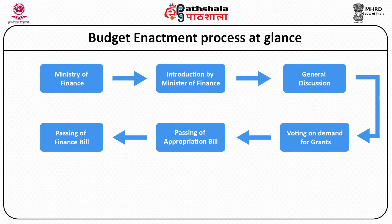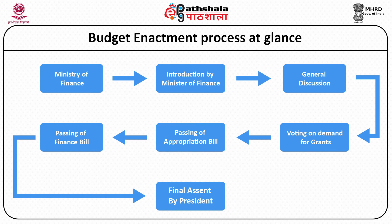The next stage in the budget enactment process is the Budget in Rajya Sabha. After all the discussion is complete and the budget is voted by the Lok Sabha, it goes to the Rajya Sabha. However, the Rajya Sabha has only limited functions to perform because it has no power either to introduce amendment or rejection. It can only discuss it and return it back to the Lok Sabha within a period of 14 days from the receipt of the bill. If it does not do so, it is assumed that it has been passed by it. The last step in the budget enactment process is the Presidential Assent. After the budget is passed by the Rajya Sabha, it goes to the President, after whose assent it is ready for execution.